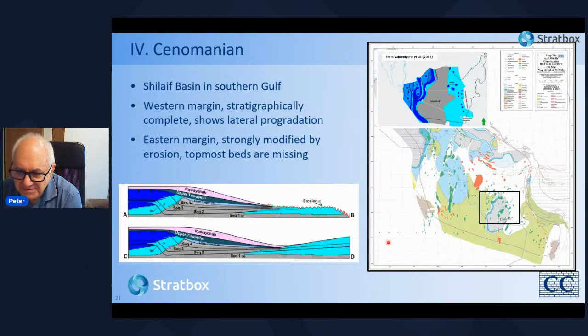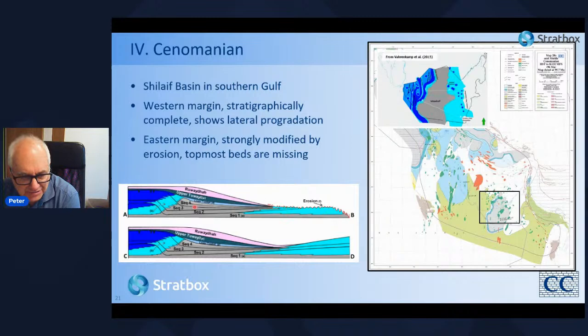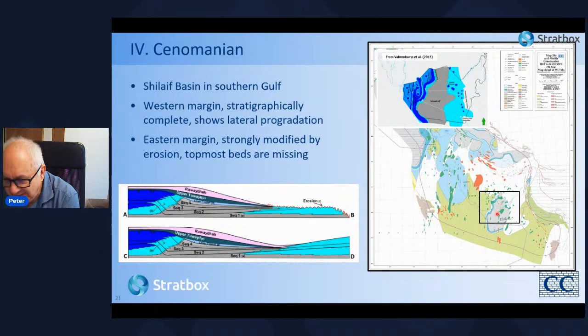In the southern Gulf, the Cenomanian Mishrif consists of a carbonate platform surrounding the Shilaif basin — based on work by Volker Vahrenkamp published in 2015. The western margin is stratigraphically complete and shows a number of lateral progrades as the carbonate system builds out into the basin, but the eastern margin has been strongly modified by erosion: the topmost beds are missing due to the top Mishrif unconformity. I want to demonstrate the effects of this unconformity in more detail.